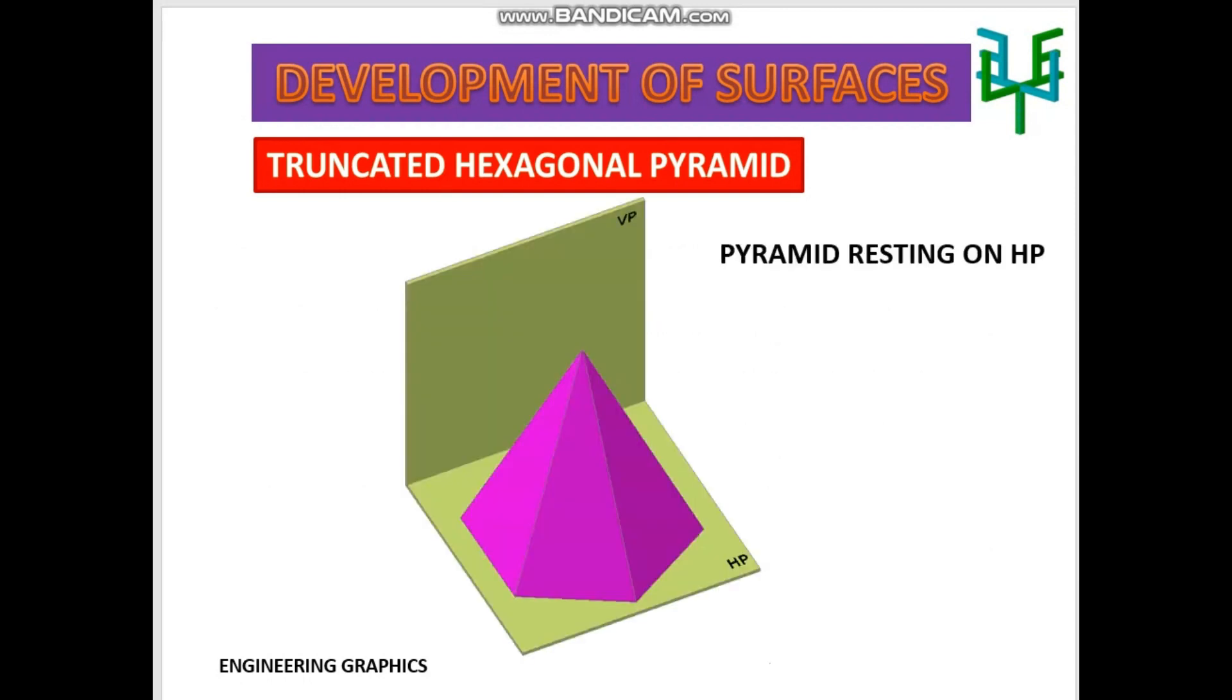Hexagonal pyramid is resting on the ground or HP. Two base edges of the pyramid are perpendicular to VP. Sectional plane is perpendicular to VP and inclined to HP.